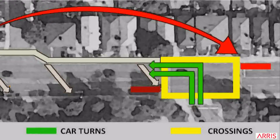Likewise, you can tape the intersection to show cars how to come up and proceed at a 90-degree angle so they have full visibility. They are also able to use both lanes, which means more of them get out without feeling the pressure.